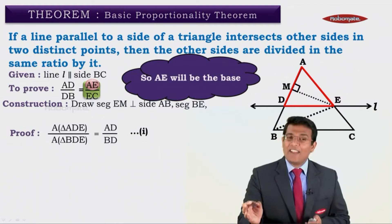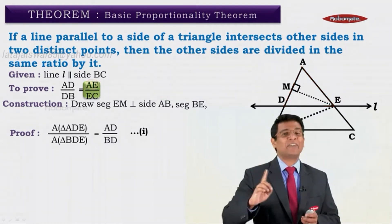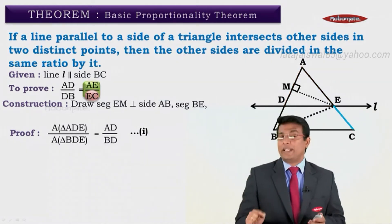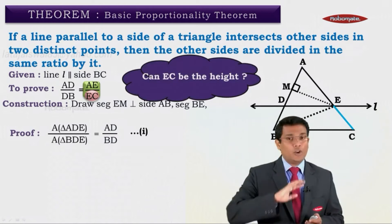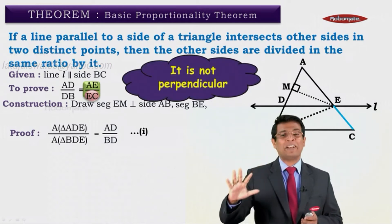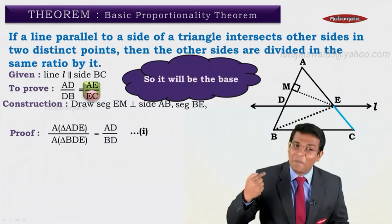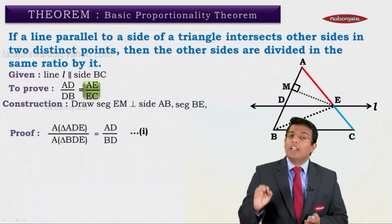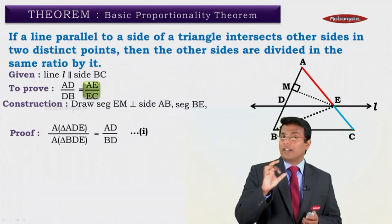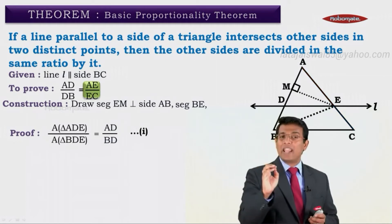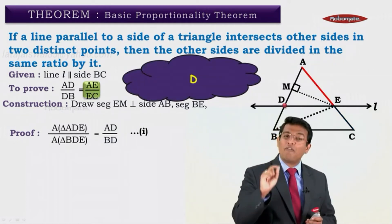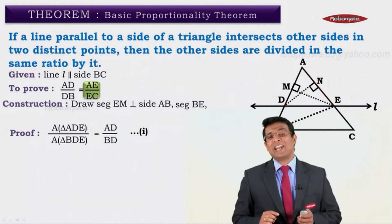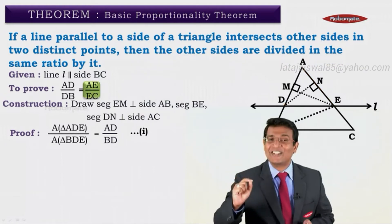So AE will be the base of triangle ADE. Similarly, when we consider EC in the denominator, EC cannot be the height because it is not a perpendicular segment — so EC is also the base of another triangle. AE and EC are the two bases we are going to consider. Since AE is the base of triangle ADE, the height must be drawn from D, so we draw DN perpendicular to AE. That is the next construction.